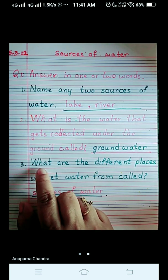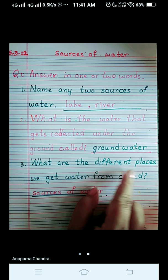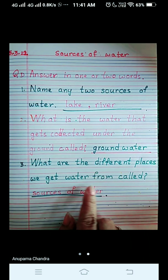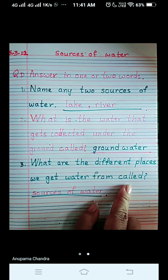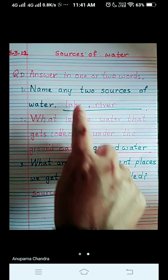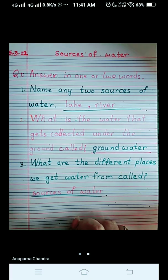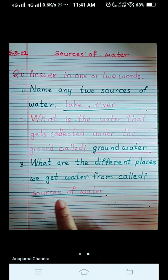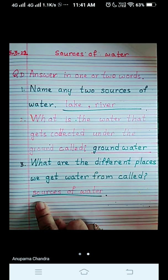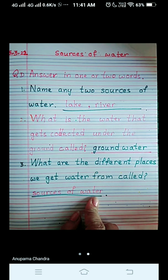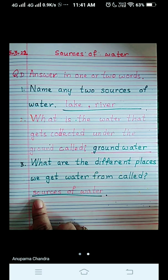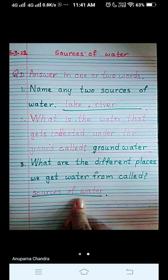Now, number three is what are the different places we get water from called? Different places we get water. Where do we get water from? Like lake, river, wells, etc., and rain as well. Rain is the main source of water. Remember children, rain is the main source of water. So all these things are called sources of water. Check out the spelling again. S-O-U-R-C-E-S sources, O-F of water, W-A-T-E-R water.